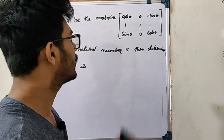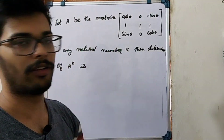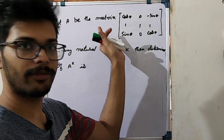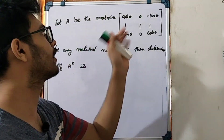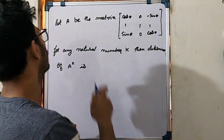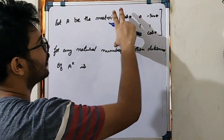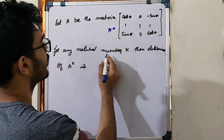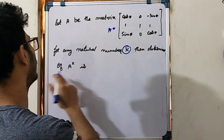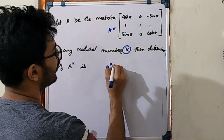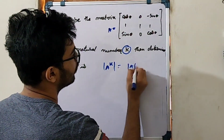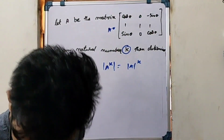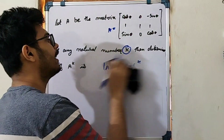This is a simple question. I will answer all the questions. Let A be a matrix. For natural number K, we need to find the determinant of A to the power K.